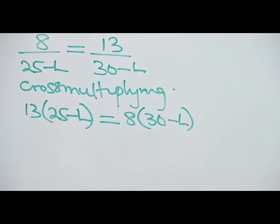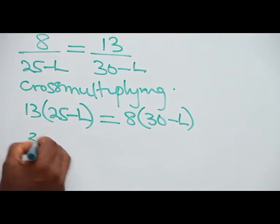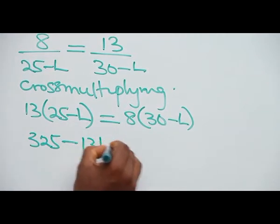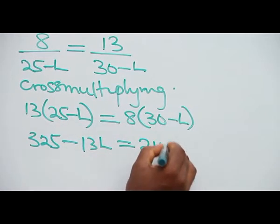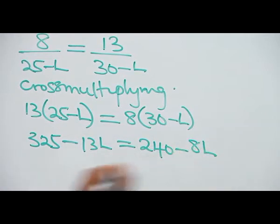This will give us 325 minus 13L is equal to 240 minus 8L.